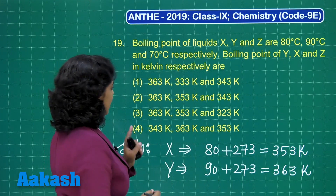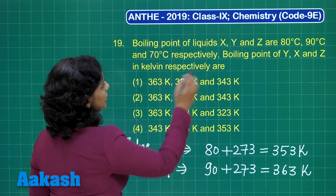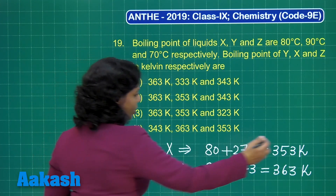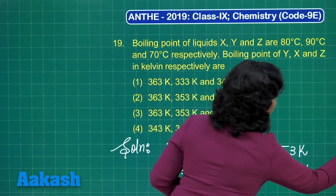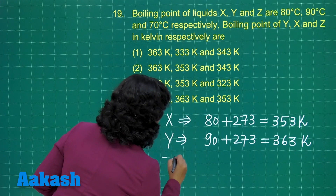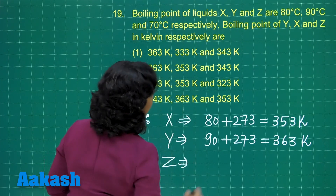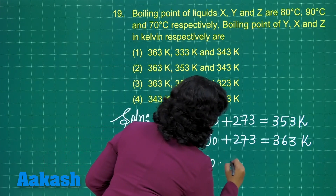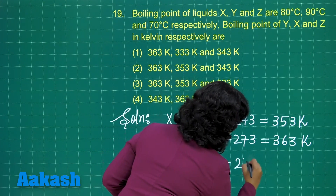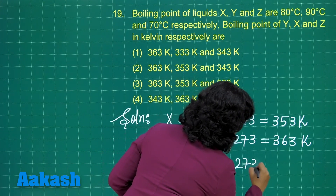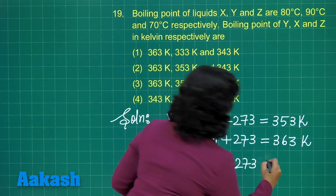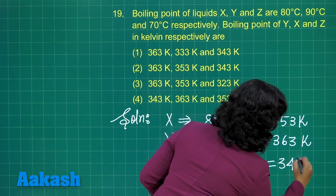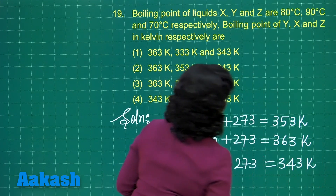After this, for Z, its boiling point is 70 degrees Celsius. Adding 273, this value is 343 Kelvin.